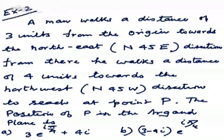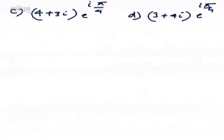Let us come to Example 2: A man walks a distance of 3 units from the origin towards the northeast direction. From there he walks a distance of 4 units towards the northwest direction to reach point P. The position of P in the Argand plane is: (A) 3e^(iπ/4) + 4i, (B) (3-4i)e^(iπ/4), (C) (4+3i)e^(iπ/4), and (D) (3+4i)e^(iπ/4).